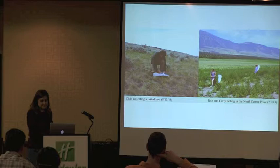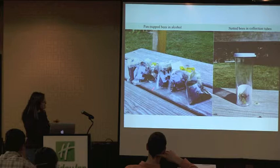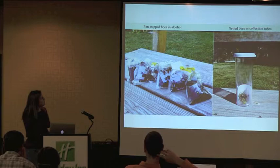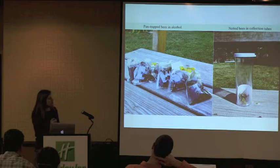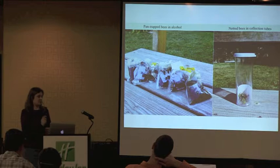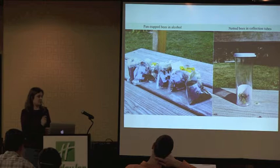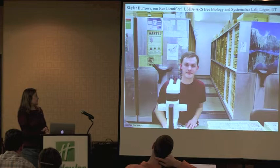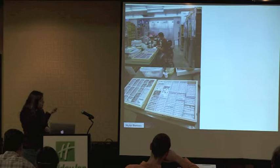Here's what we end up with: these are bees from the bowl traps, strained through mesh, put into whirlpack bags with alcohol and a label. The netted bees are put into collection tubes and frozen until we send them off. I don't identify these bees myself — identifying bees to species is notoriously difficult — so we send them to the real experts. My co-author Skylar Burrows is at the USDA ARS Bee Biology and Systematics Lab in Logan, Utah, and here he is hard at work with some MPG bees.